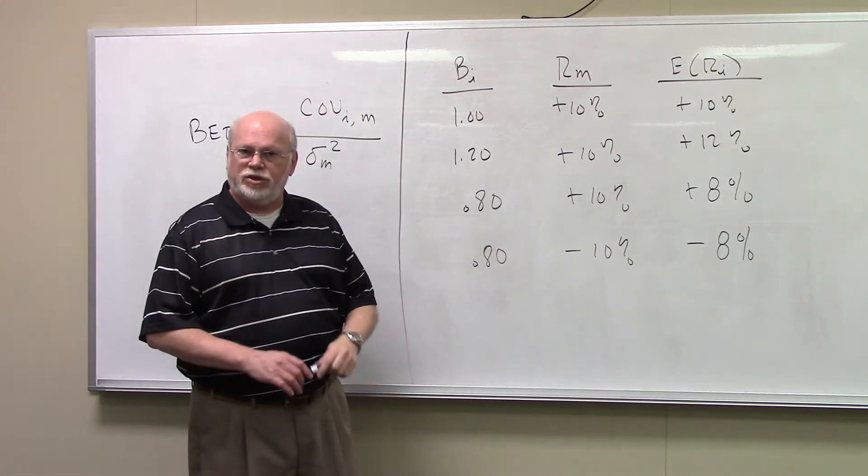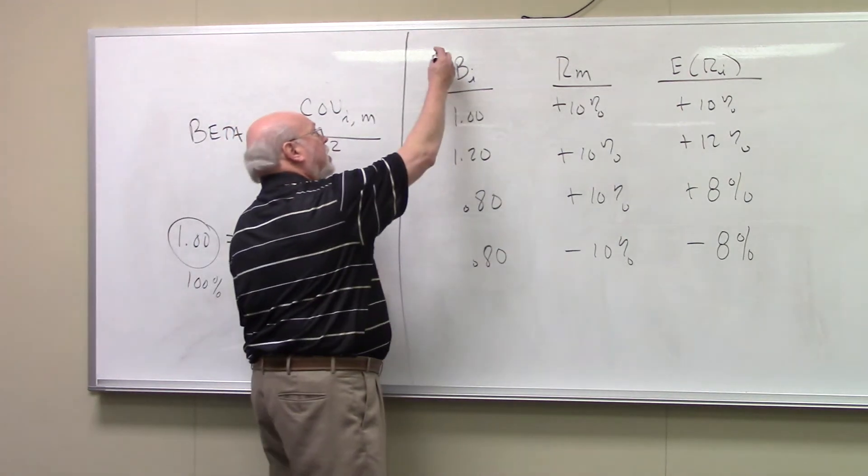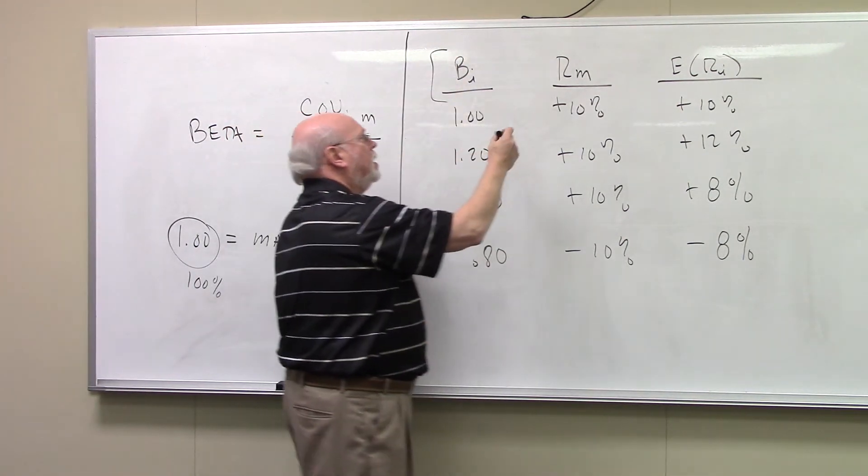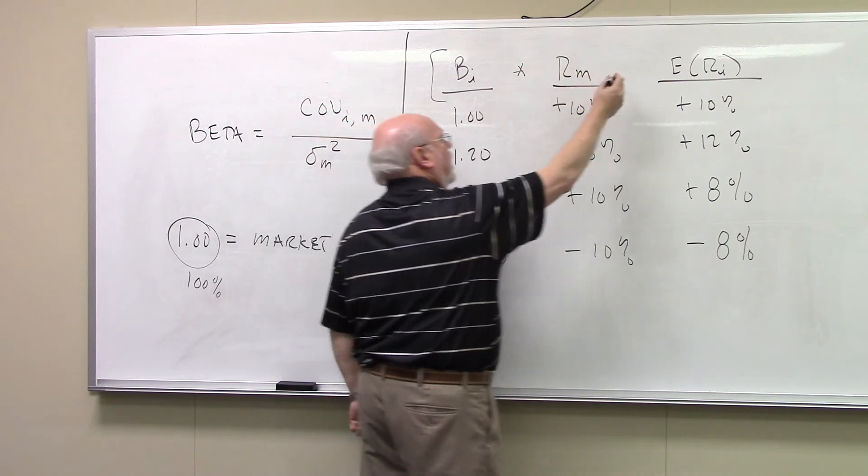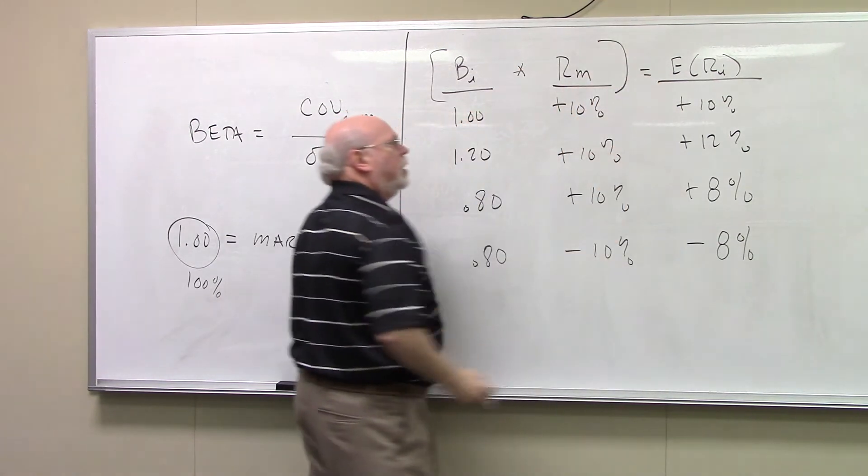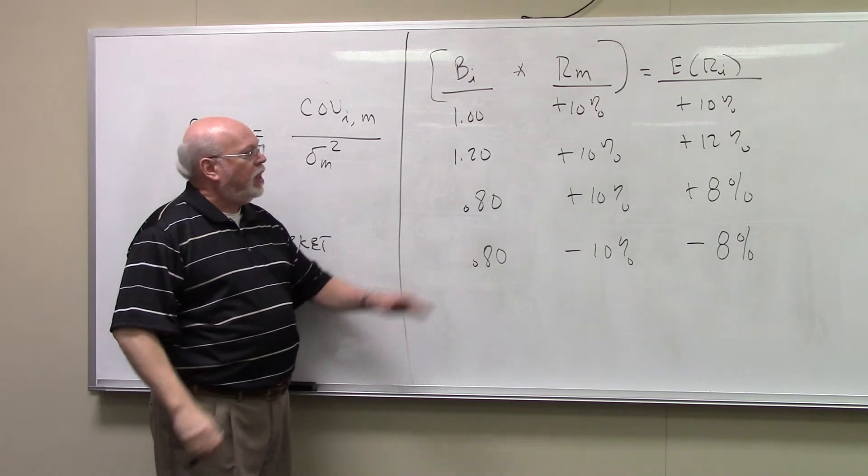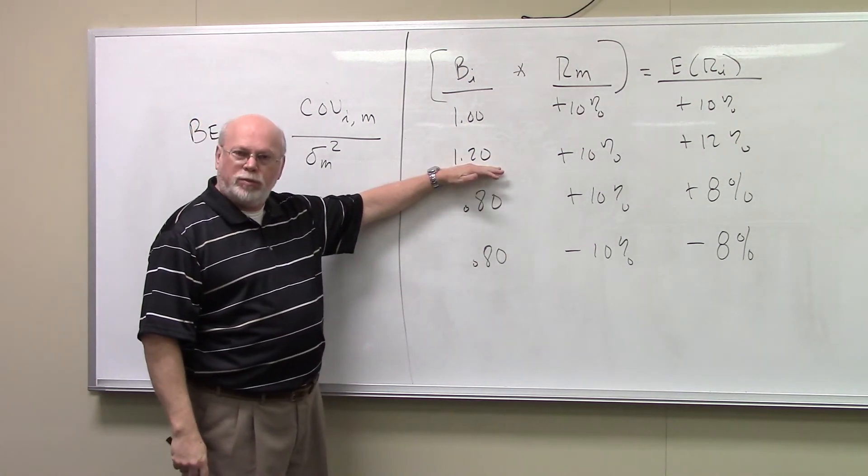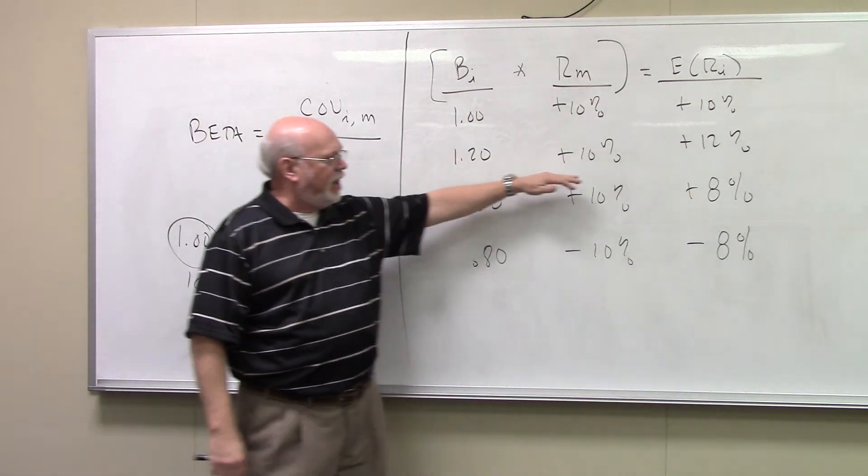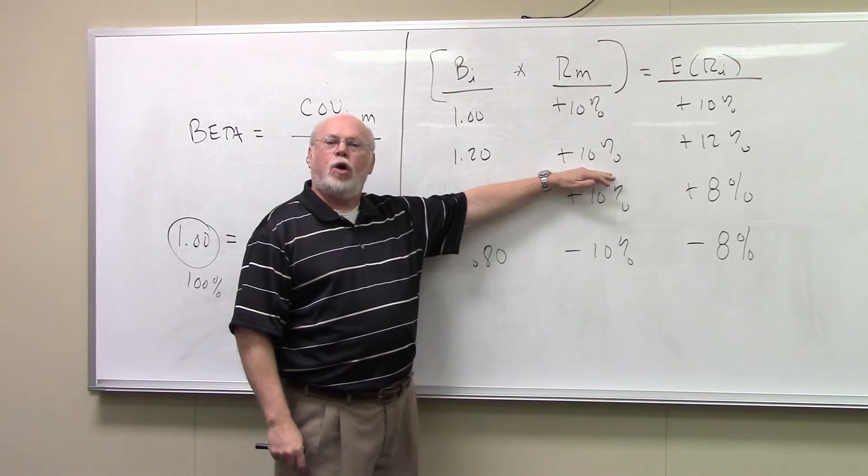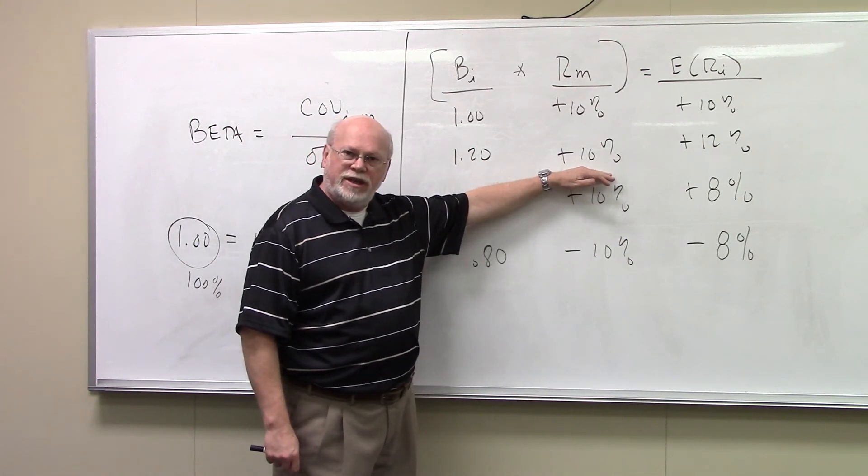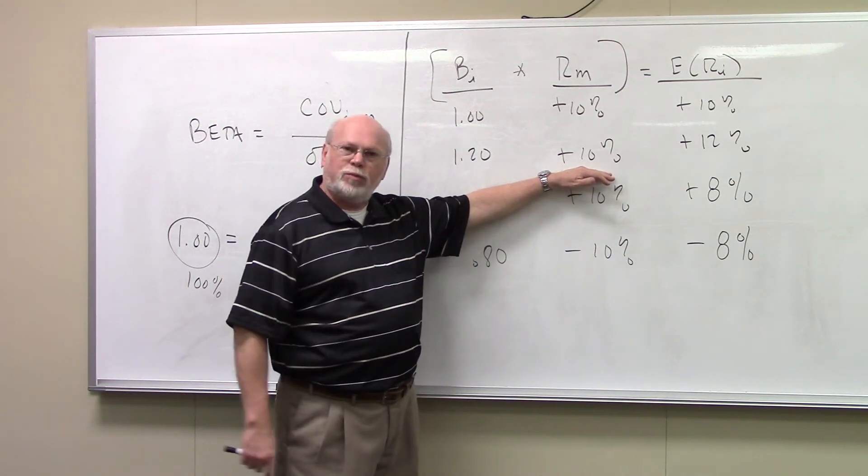Which would be this expected return out here, which would also be 10%. And you should note that if you take beta and you multiply it by the return to the market, you get the expected return. So if I'm taking on 120% of the risk of the market and the market goes up 10%, what return do I expect my asset to give me? A 12% return.